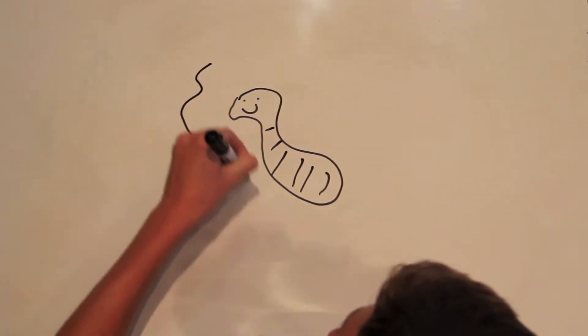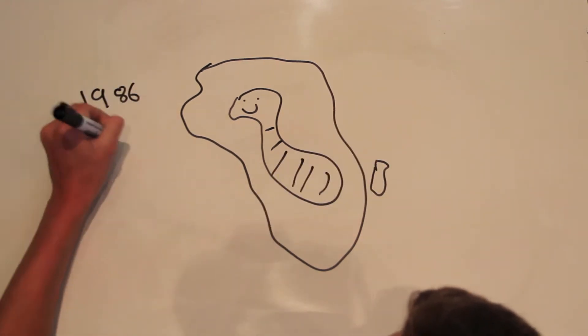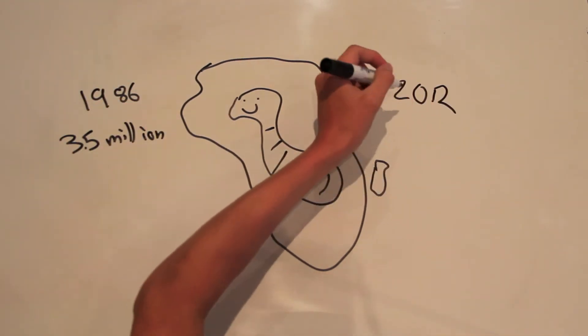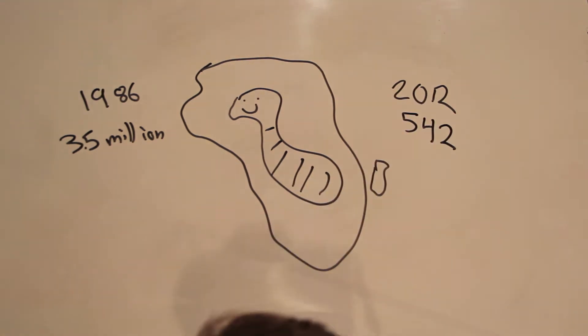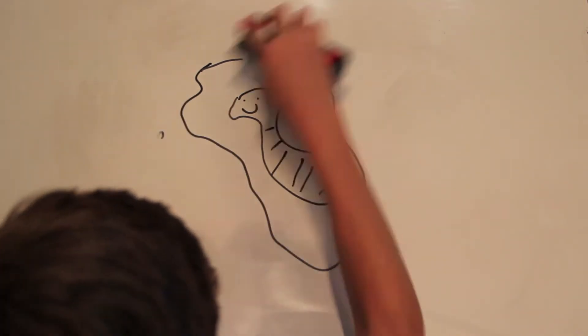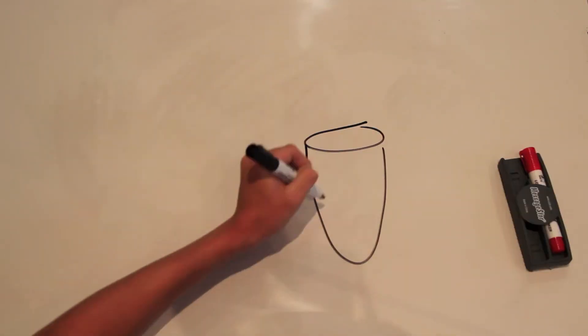So the guinea worm disease started in Africa, small, poor cities in Africa. First recorded in 1986 with 3.5 million cases. In 2012, there's only 542. So we're working on it, good job UNICEF.